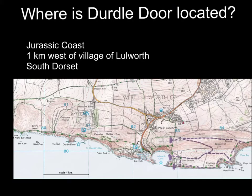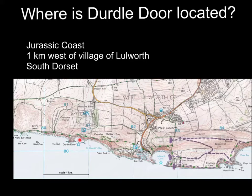As with any geographical case study, the first thing we need to know is where it's located. As you'll be able to see on this map, Durdle Door is located approximately one kilometre west of Lulworth Village. It's located on the south coast, on the English Channel, on a stretch of coast more famously known as the Jurassic Coast, and is actually part of the county of Dorset.